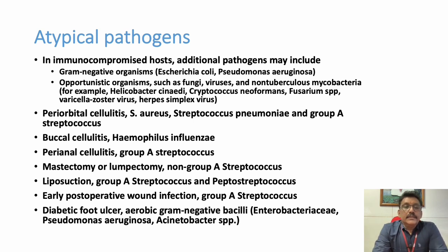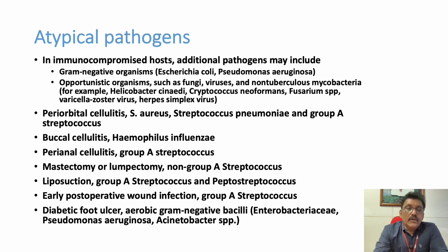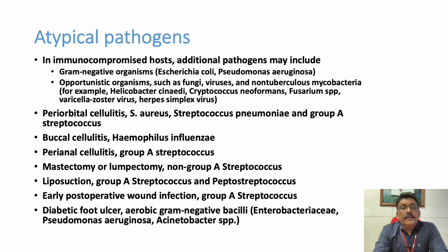The most common organism in cellulitis is gram-positive cocci like Streptococcus and Staphylococcus. In immunocompromised or chronic infection patients, gram-negative organisms come into picture. For acute cellulitis, gram-positive cocci are the cause. In hospital-acquired cellulitis, remember methicillin-resistant Staphylococcus (MRSA). In chronic lesions or immunocompromised patients, always think about gram-negative organisms — important for treatment decisions.